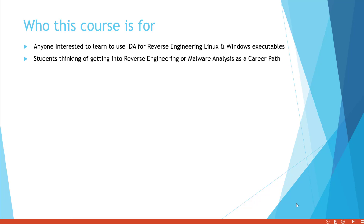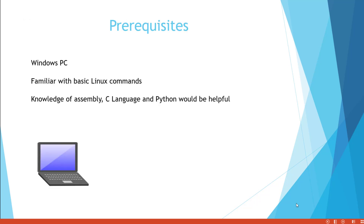Who this course is for: It is for anyone interested in learning to use EDA for reverse engineering Linux and Windows executables. It is also for students thinking of getting into reverse engineering or malware analysis as a career path. Prerequisites: for this course you need to have a Windows PC, some familiarity with basic Linux commands, and knowledge of assembly, C language, and Python will be helpful.